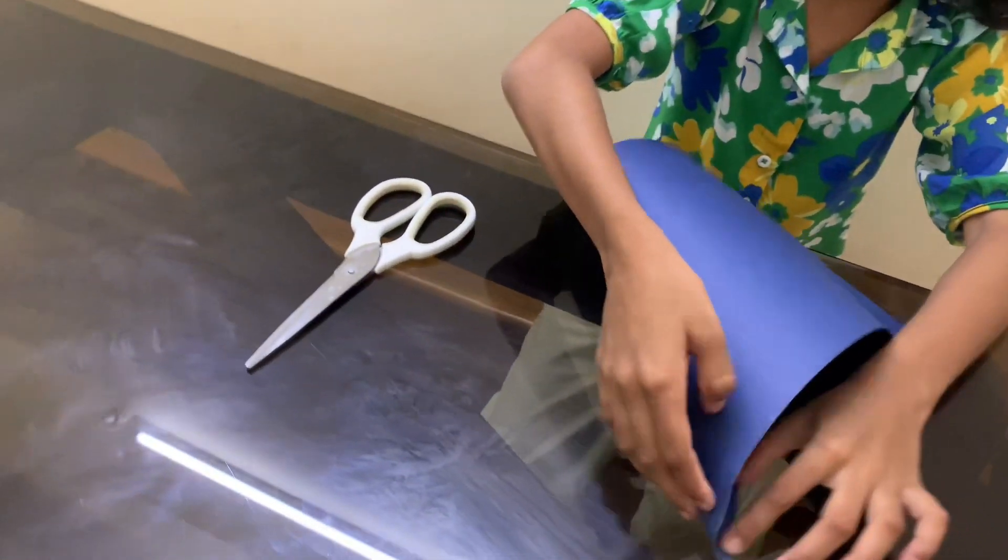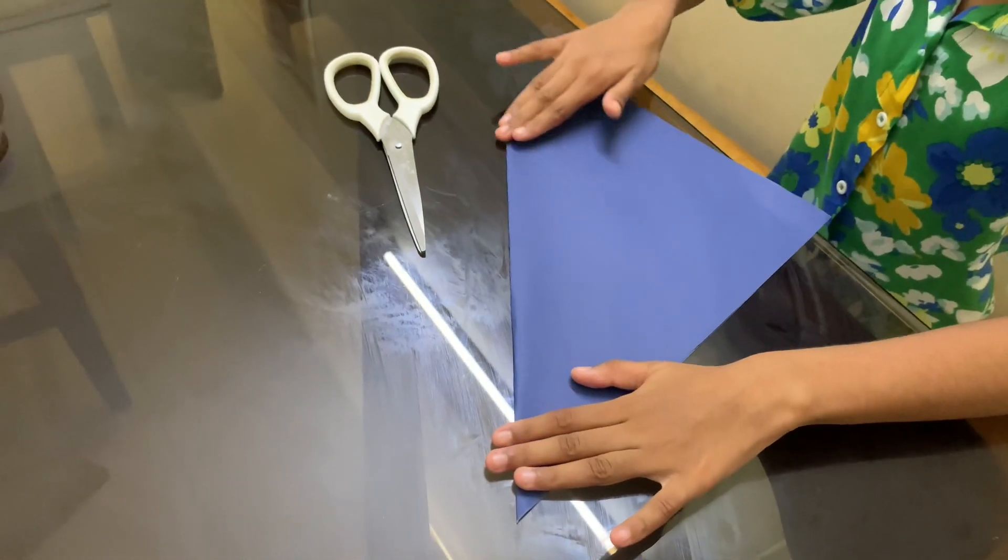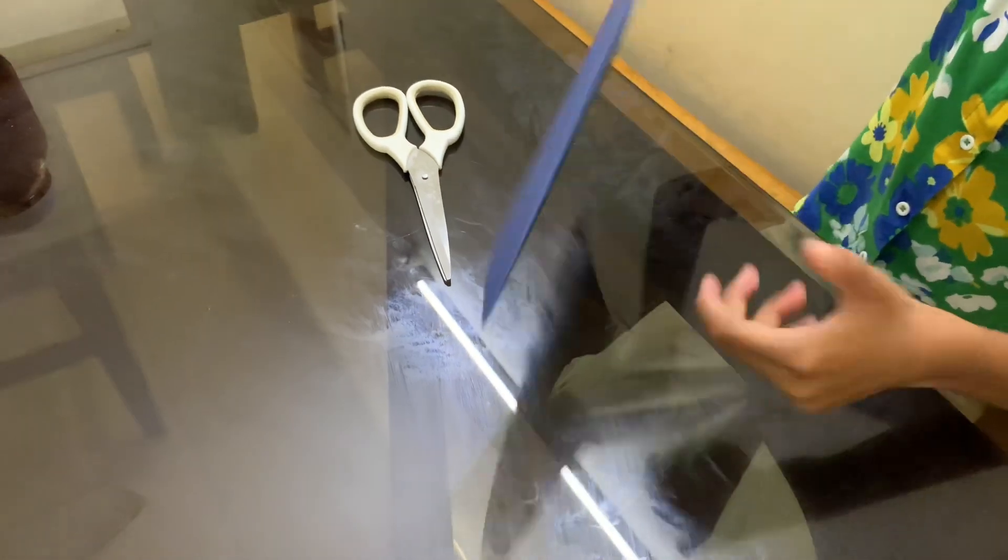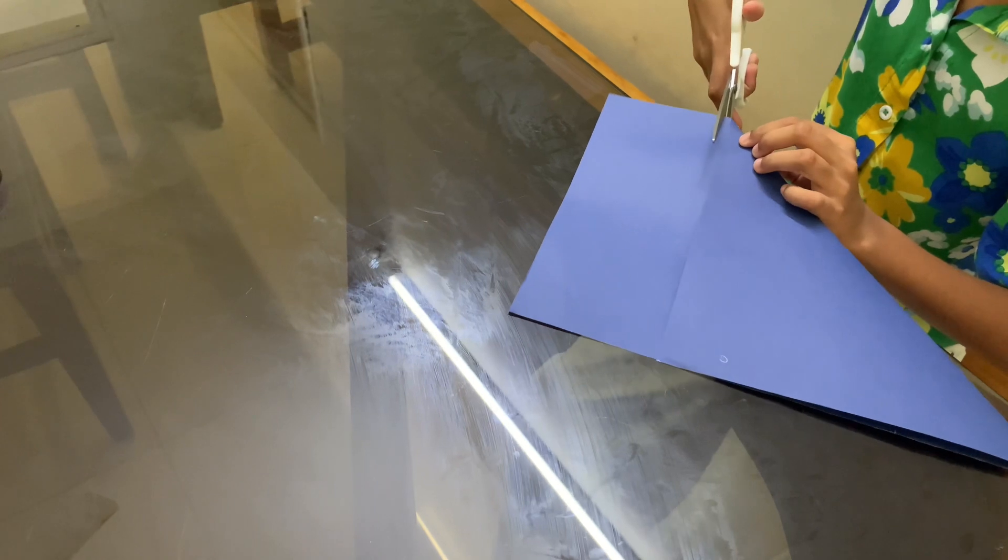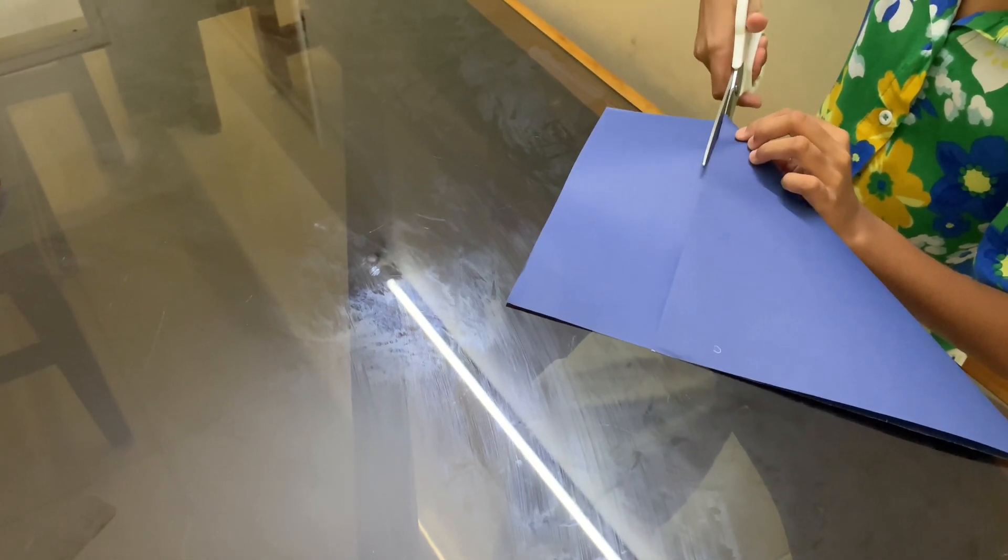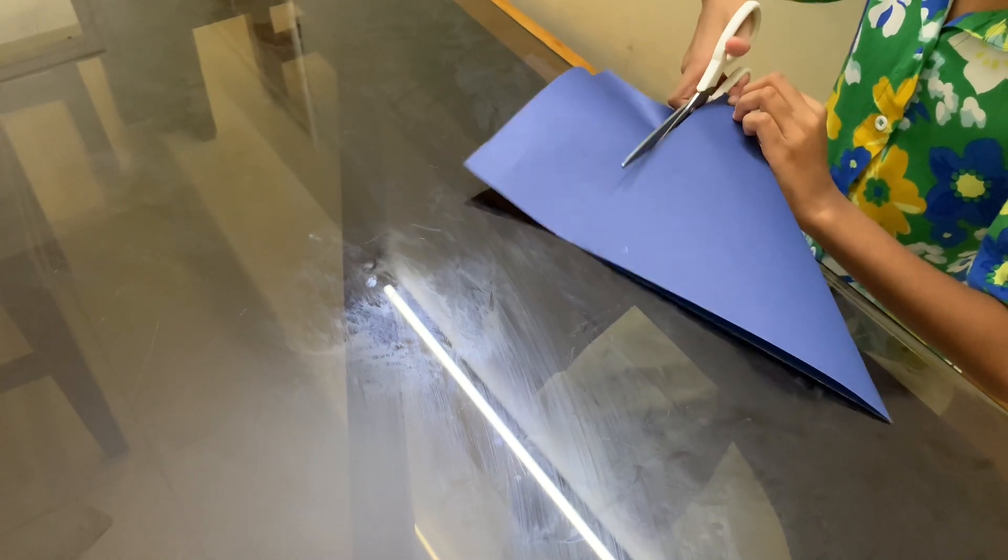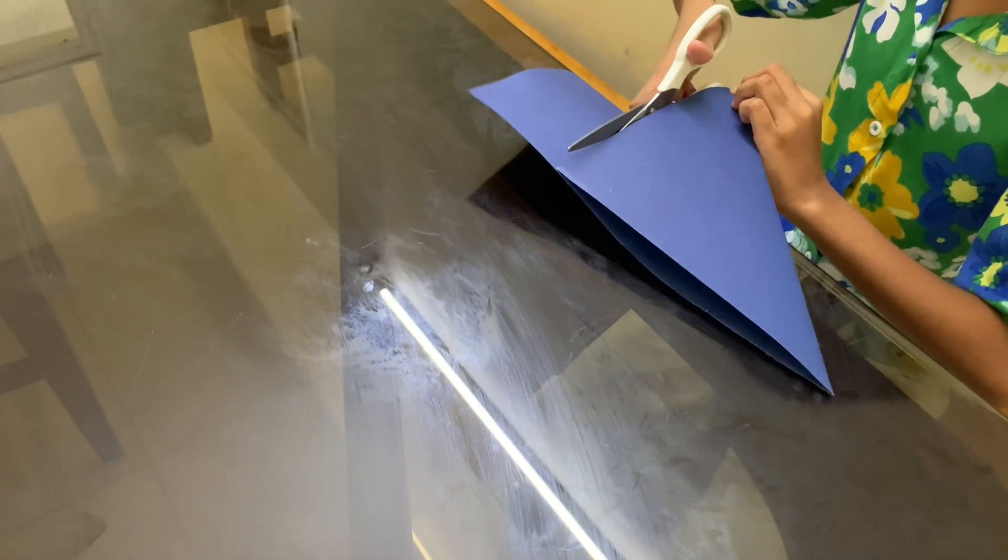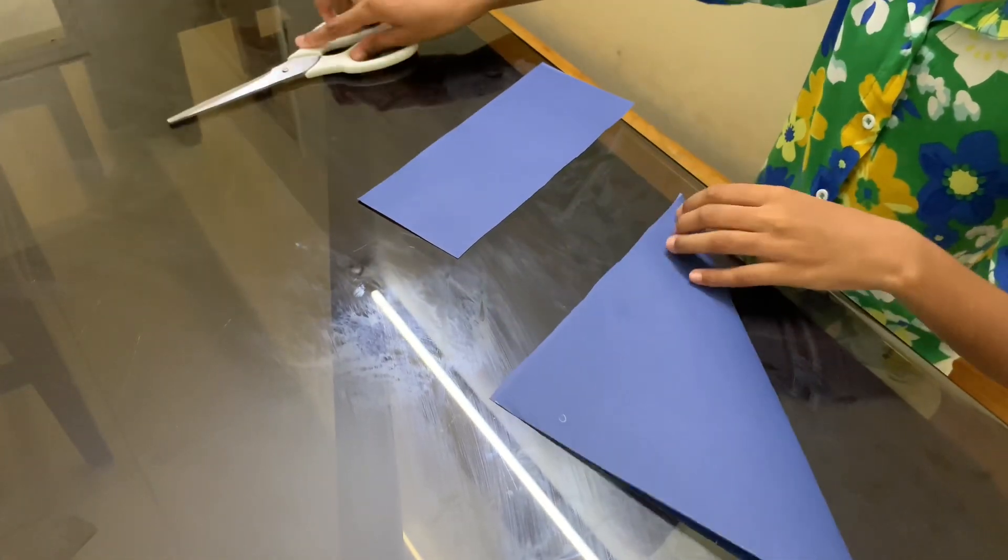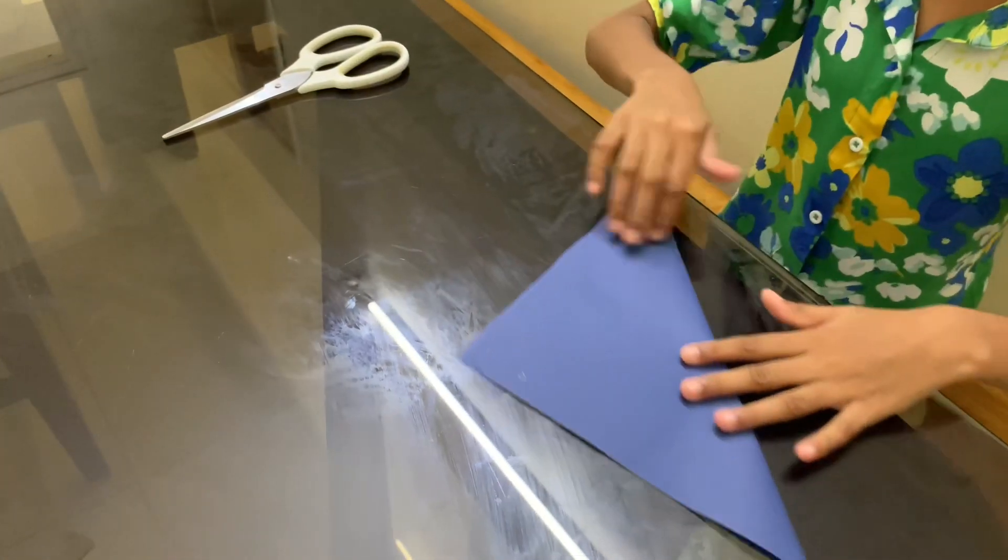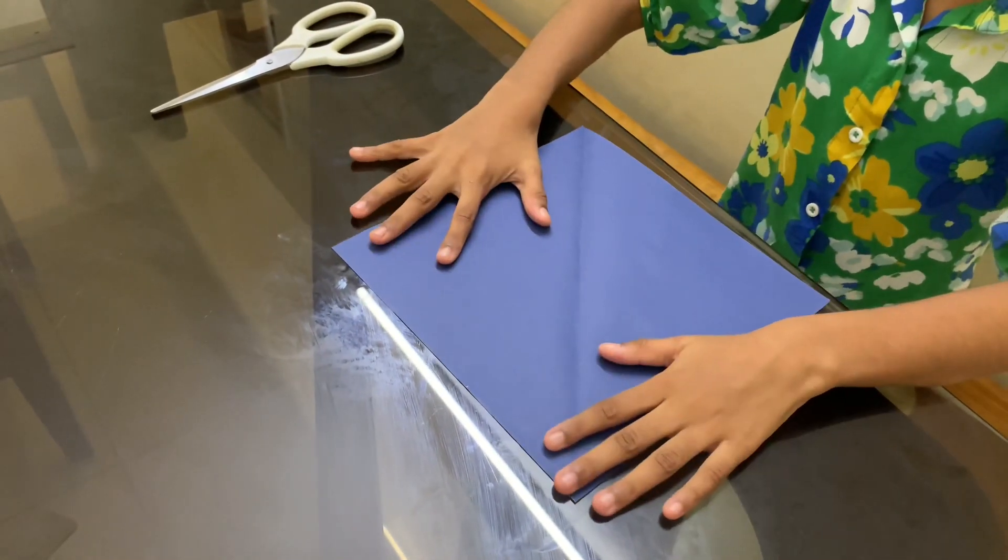Fold it like this. Now we have to cut only the part that we don't need. Now, you have to open, and you got a square shape.